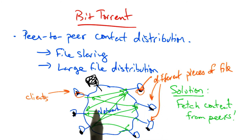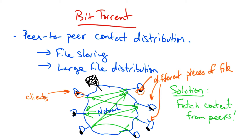By trading different pieces of the same file, everyone eventually gets the full file. The idea is that hopefully we'll be able to assemble the entire file at the end, by the time all the clients have swapped.